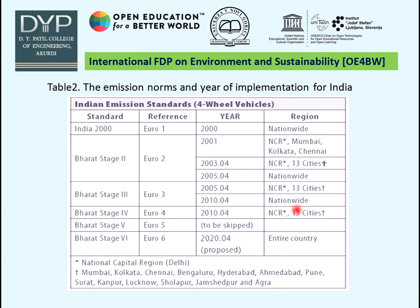Table 2 indicates emission norms and year of implementation for India. The Indian 2000 Standard references EURO 1, implemented in 2000 nationwide. Bharat Stage 2 references EURO 2, implemented in 2001 for the National Capital Region (NCR), that is Delhi, Mumbai.